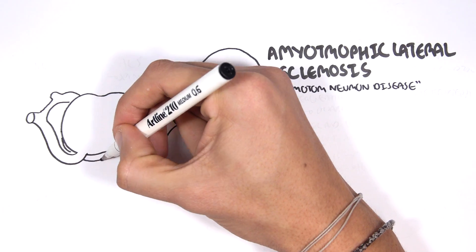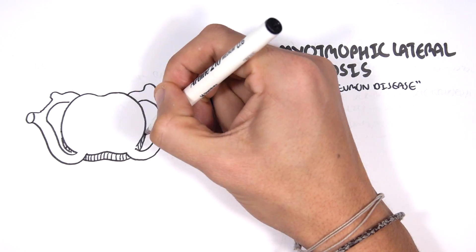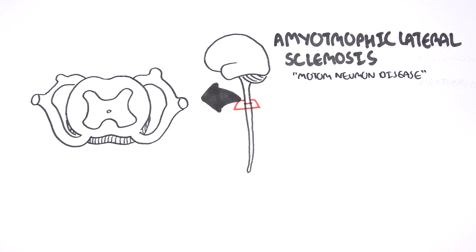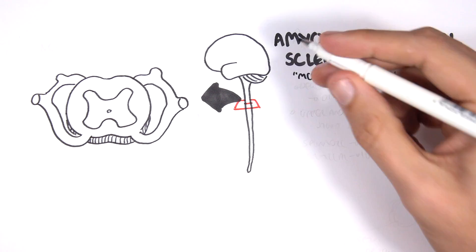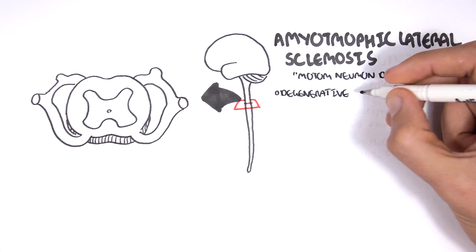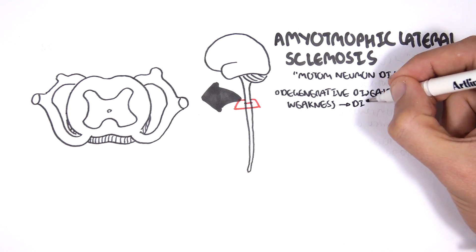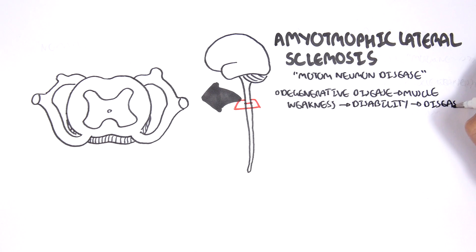If we were to cut a section of the spinal cord, we can see some hallmarks of motor neuron disease. It is a degenerative disease that causes muscle weakness, because we're not using our muscles as effectively due to the problem with the nervous system. Muscle weakness will subsequently lead to disability and progressively to death.